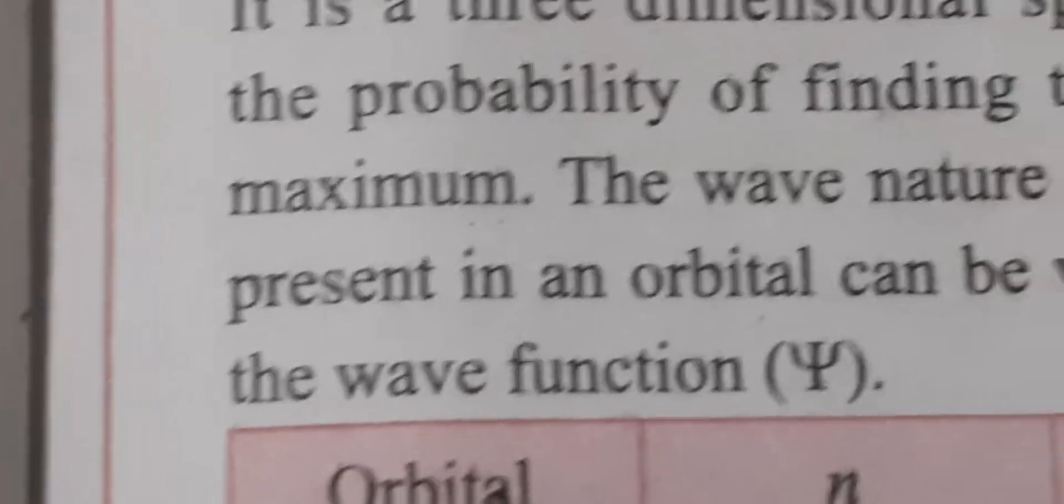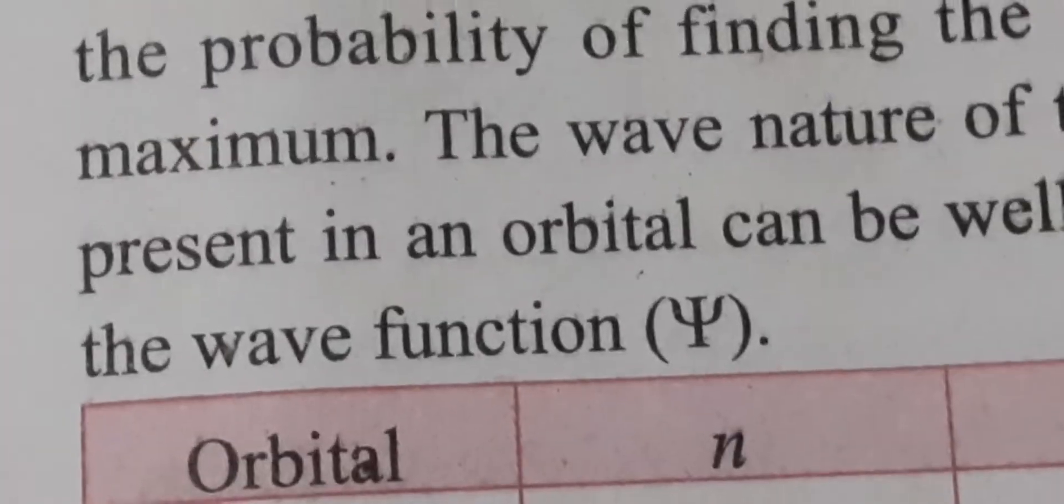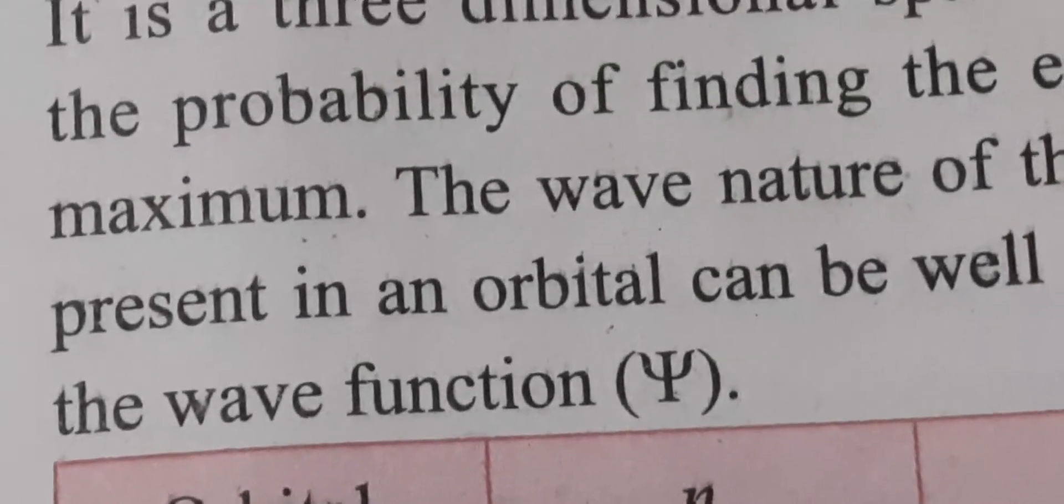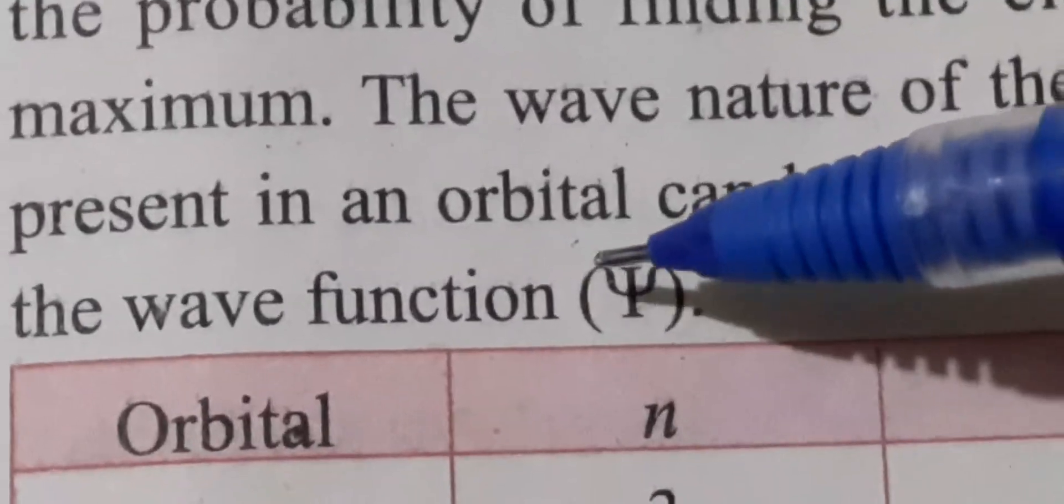The wave nature of the electron present in an orbital can be well defined by the wave function. Electron has two natures: particle nature as well as wave nature. The wave nature is denoted by the wave function, Ψ (psi).